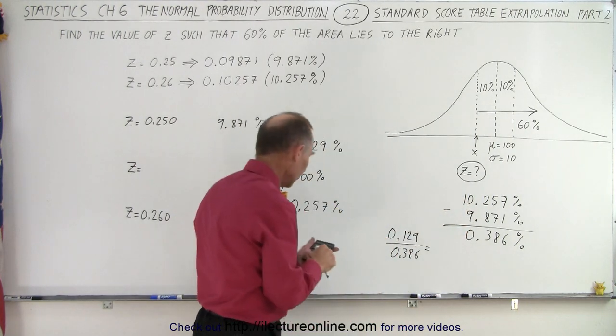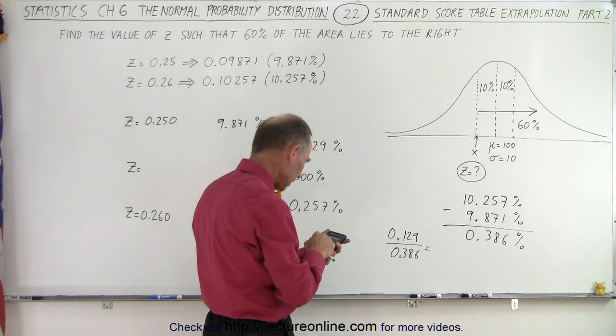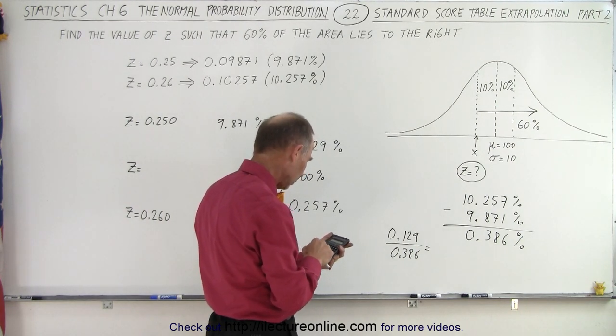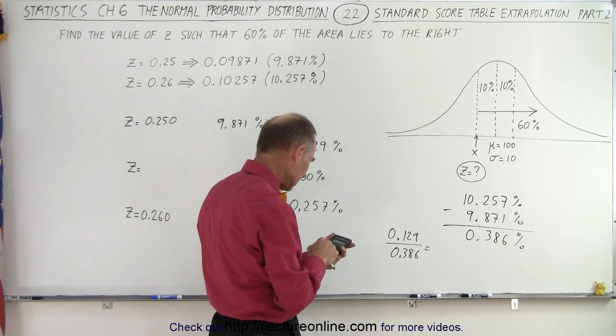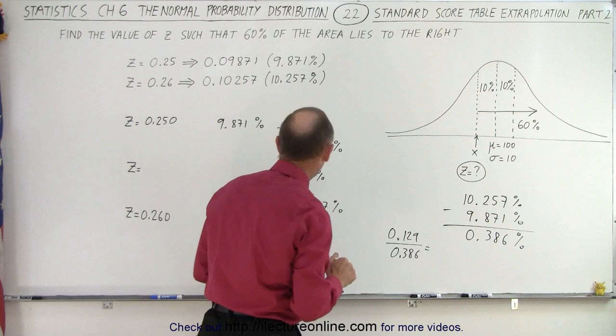let me try that again, 0.129 divided by 0.386, we get, yes, 0.334.